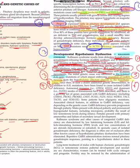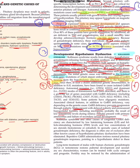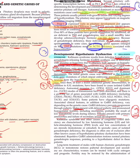GnRH deficiency prevents progression through puberty. Males present with delayed puberty, hypogonadal features, and micropenis due to low testosterone during infancy. Females present with primary amenorrhea and failure of secondary sexual development. Kallmann syndrome and other causes of congenital GnRH deficiency are characterized by low LH, FSH, and low sex steroids — testosterone in males and estrogen in females. In sporadic cases of isolated gonadotropin deficiency, the diagnosis is often one of exclusion.